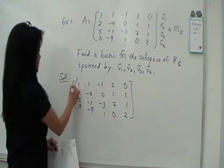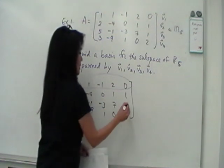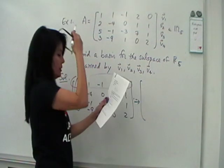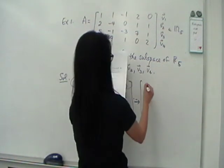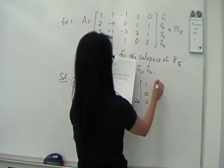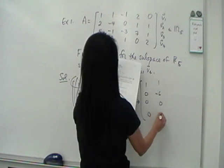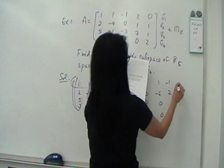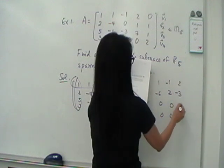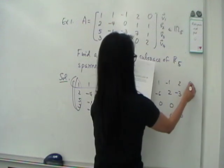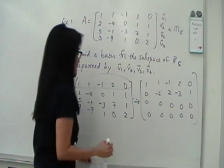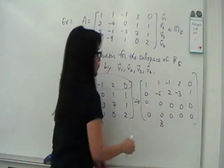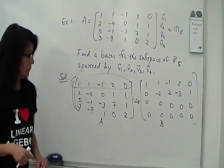So let's see. So what I did here was to pivot, as usual. And I ended up with this matrix in my notes. So we have 1, 1, -1, 2, 0; 0, -6, 2, -3, 1; and then 0, 0, 0, 0, 0. So this is the matrix A in the theorem, and it's row equivalent to a matrix B.